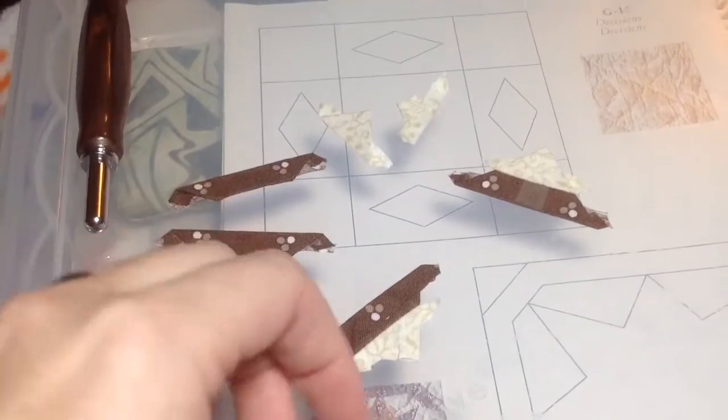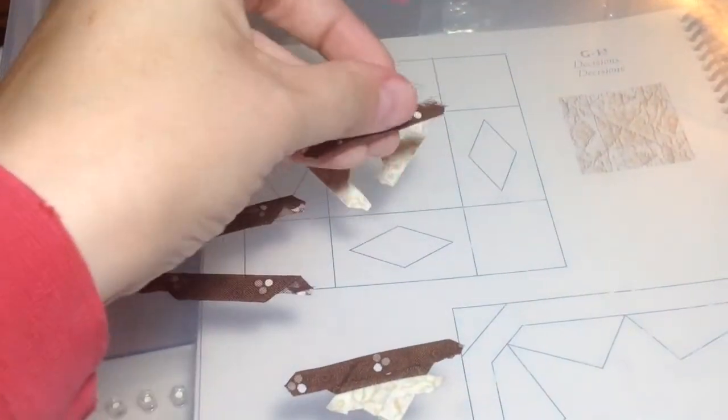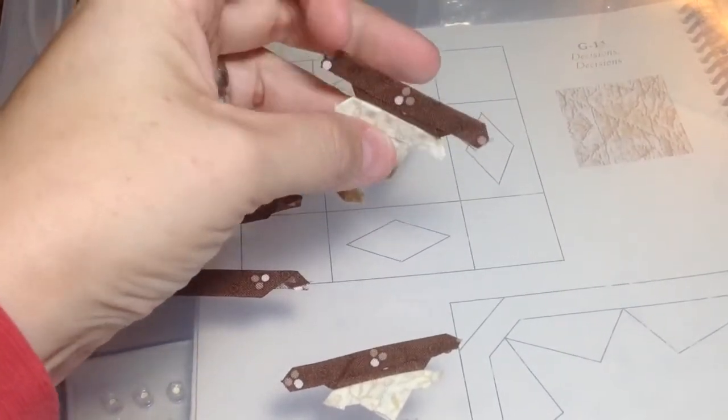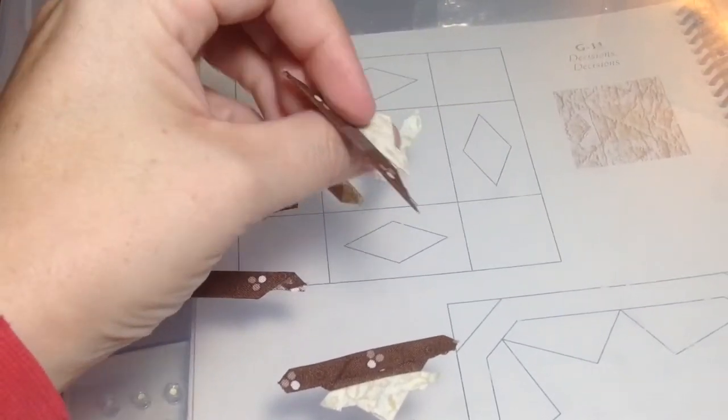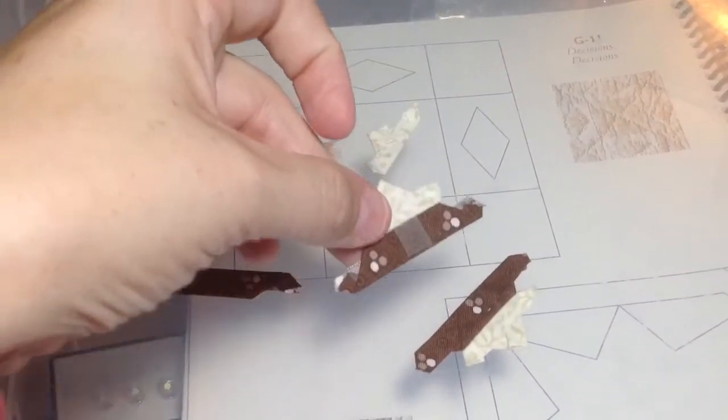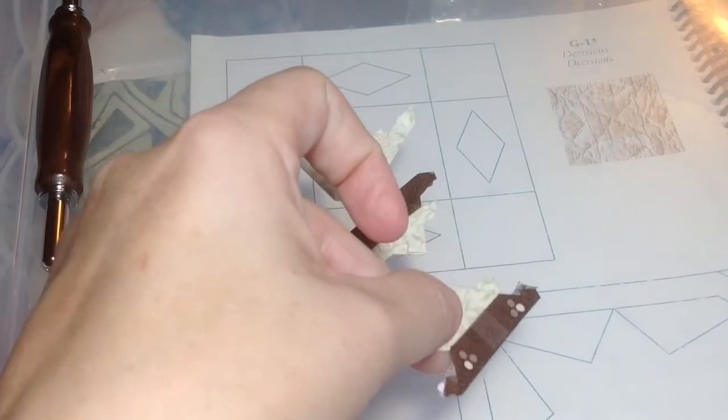Okay, now my pieces are glue basted. And I've taken them and connected them with my tape. And then I'm going to stitch them together in corner bits. And then I'll be able to take these corner bits and attach them.